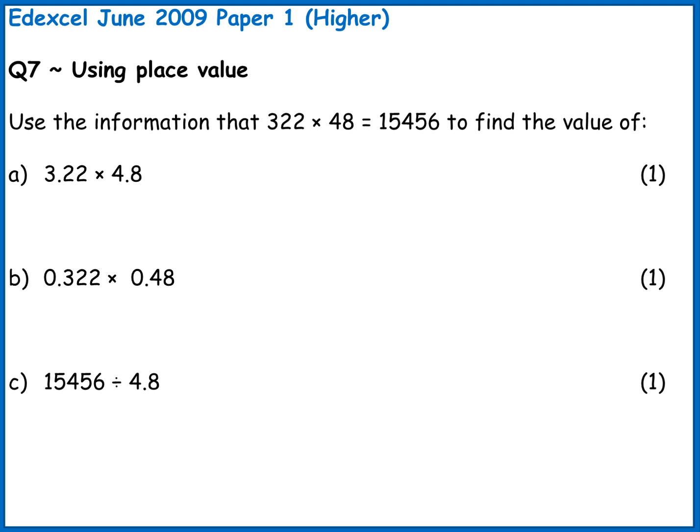This question is using information and knowledge of place value to work out some linked calculations. We're told in the question that 322 times 48 gives us 15,456. Any multiplication calculation using those digits is always going to give those digits in the answer. We're just changing the place value of the calculation.